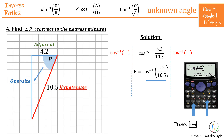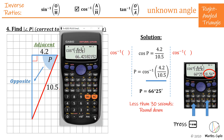To round to the nearest minute we look at the seconds. My seconds are 18.56, which is less than 30. Because this is base 60, think of it like a clock: if it's less than 30 seconds we round down, and if it's 30 seconds or greater we round up. Here it's less than 30, so we round down to 66 degrees, 25 minutes. If a question is ever asked in degrees and minutes, press this degrees-minutes-seconds button and look at the seconds to decide whether to round up or down.